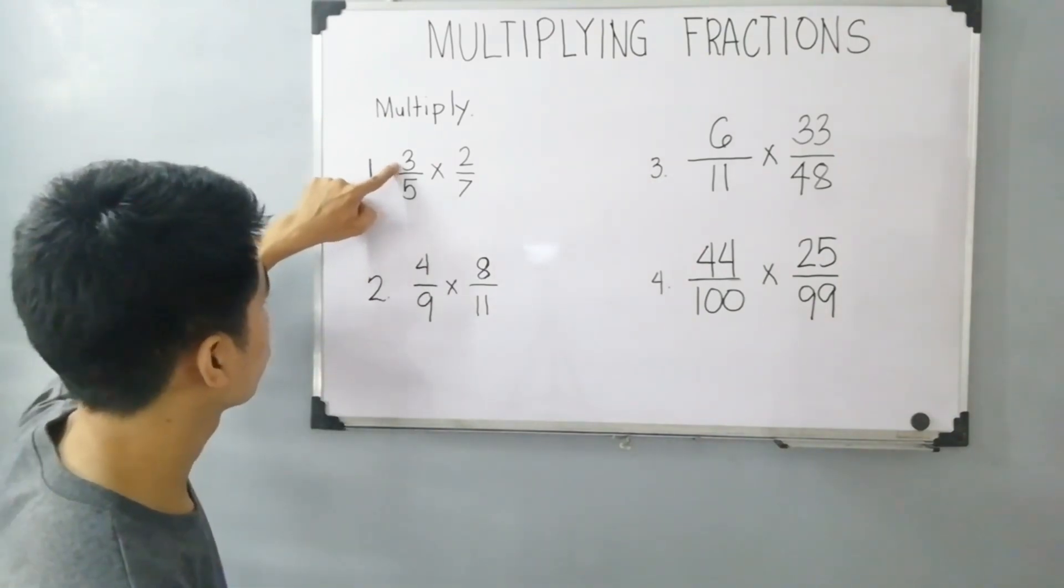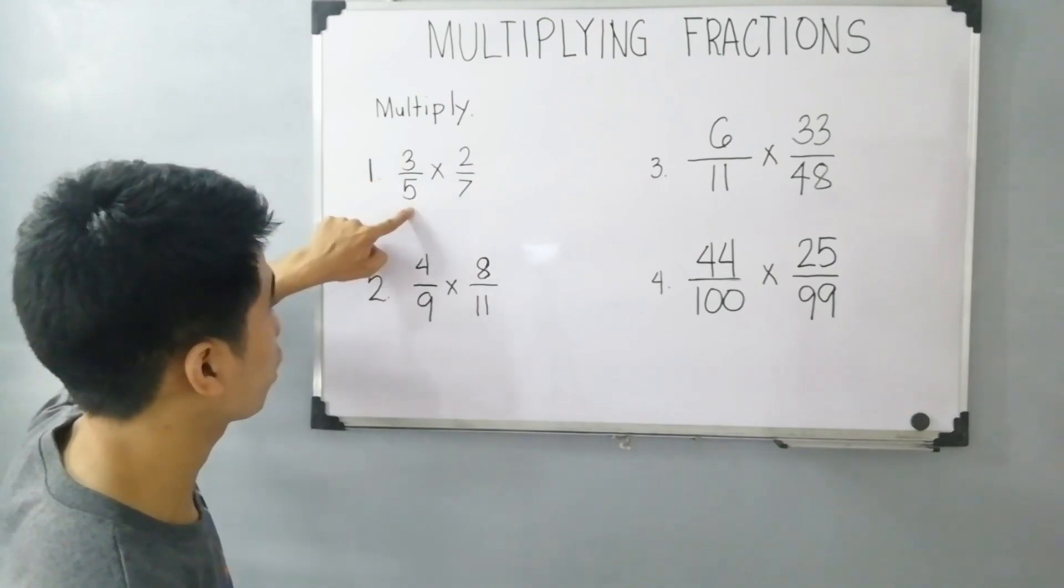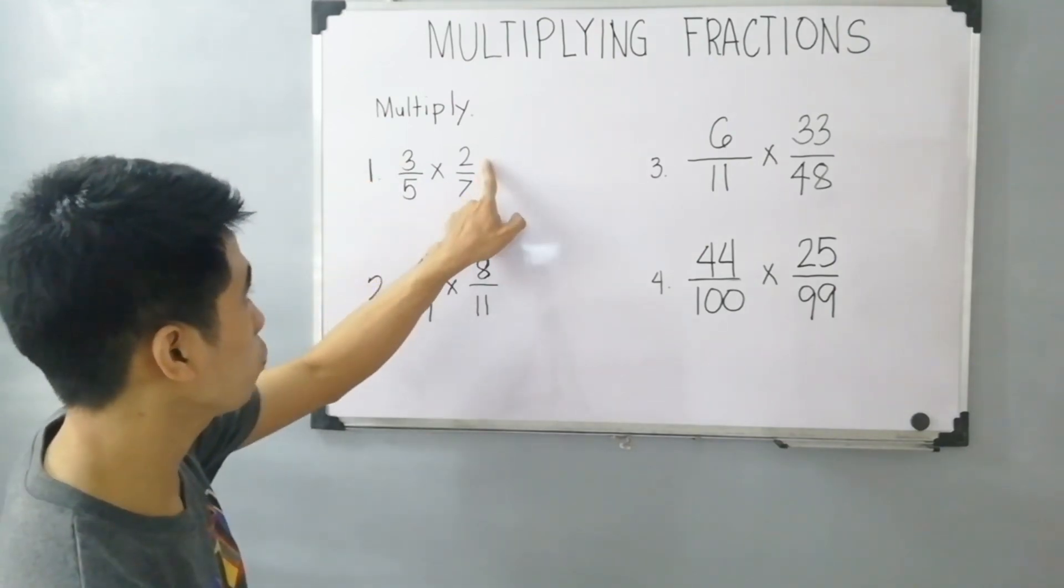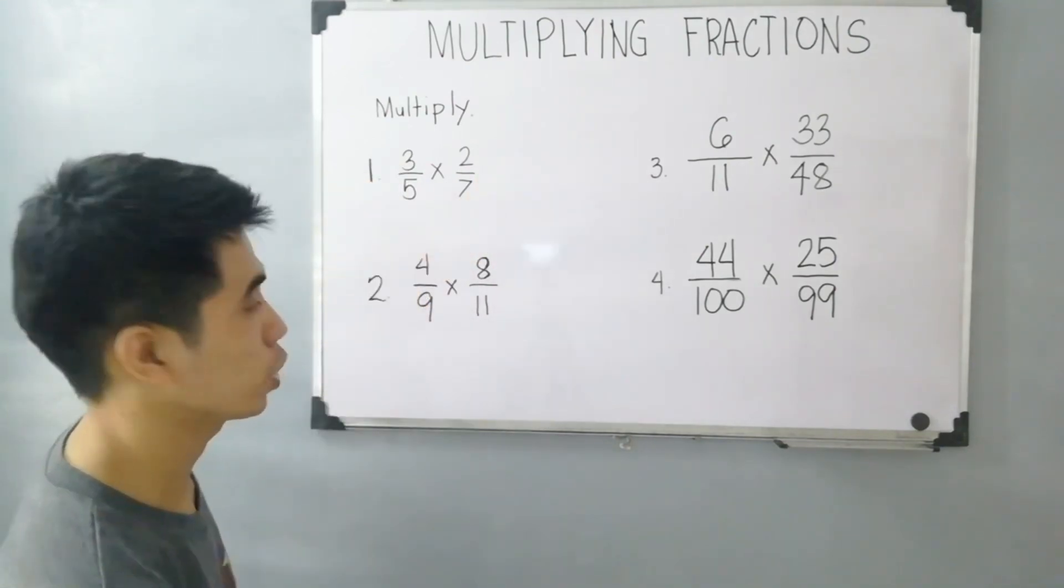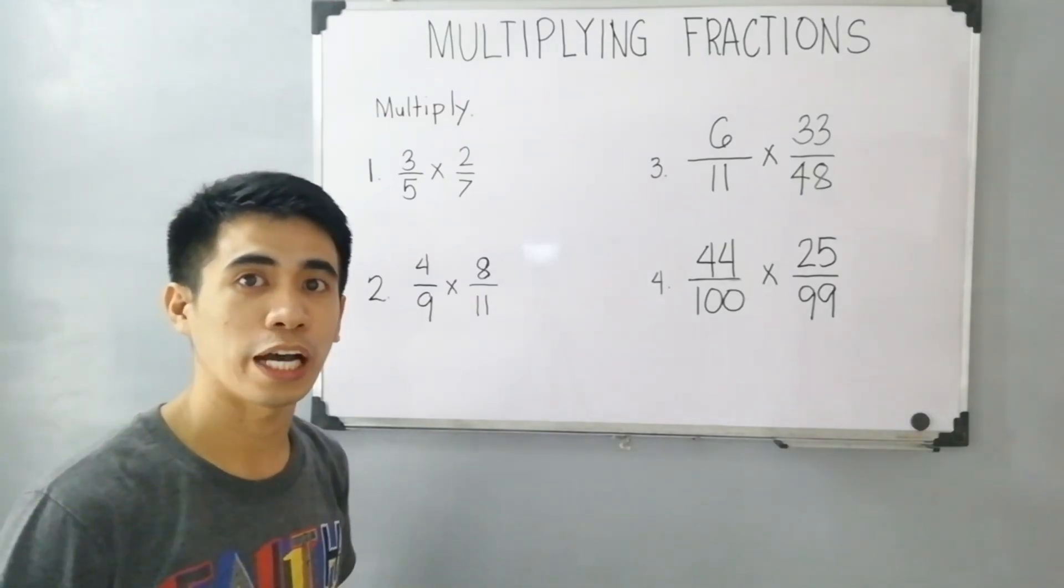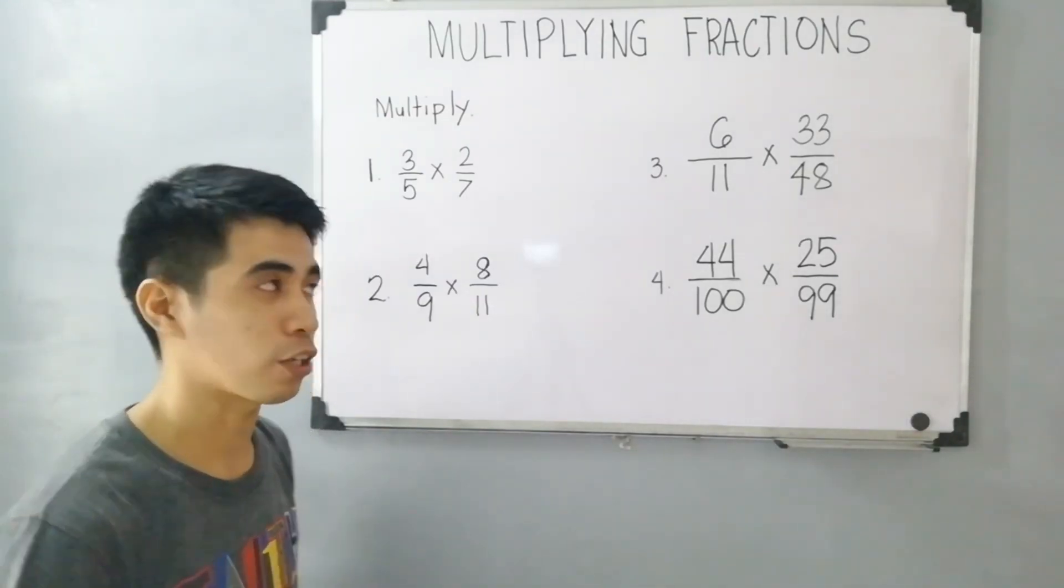We cannot simplify 3 to numerator to denominator. As well as 2, we cannot simplify 2 to denominator. Therefore, we have to proceed to the process of multiplying fractions.